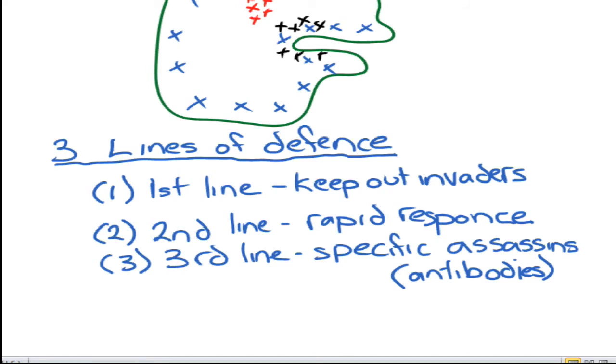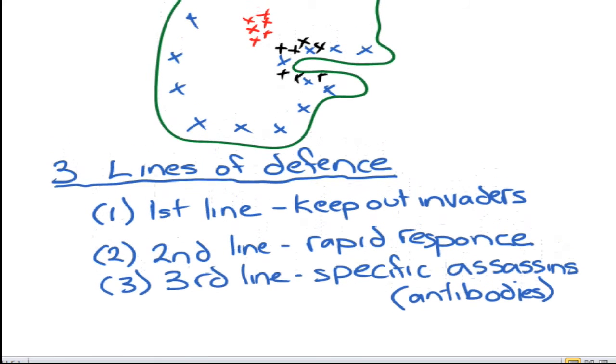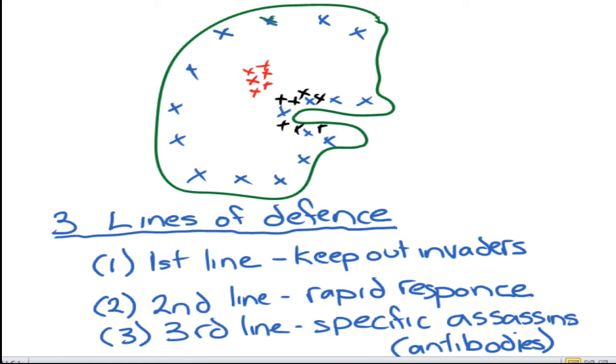In fact, I did the colors slightly wrong on this diagram. If I want the first line to be blue, keeping things out, all of these should be blue, because you have more first line around your body openings. This is still generic, keep it out.